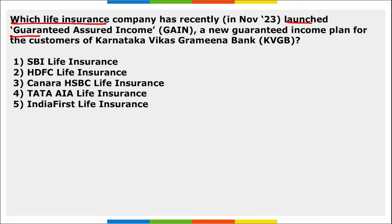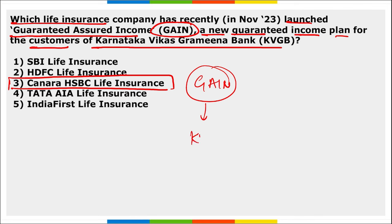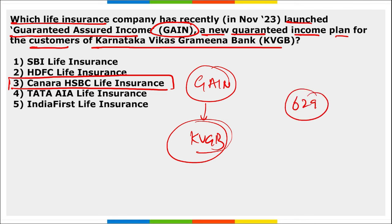Next: which life insurance company recently launched Guaranteed Assured Income Gain for Karnataka Vikas Grameen Bank? It was launched by Canara HSBC Life Insurance. This plan offers guaranteed regular income with flexibility to get premiums back at the end of the policy term, available across 629 branches of Karnataka Vikas Grameen Bank.